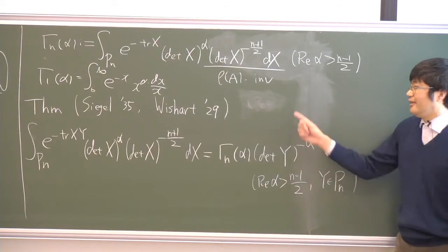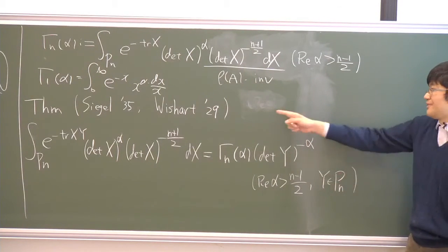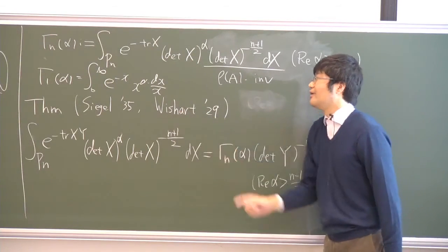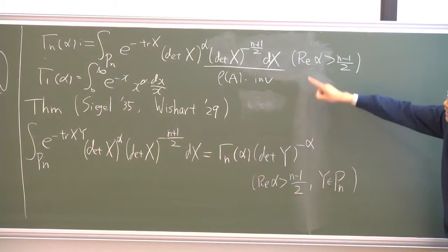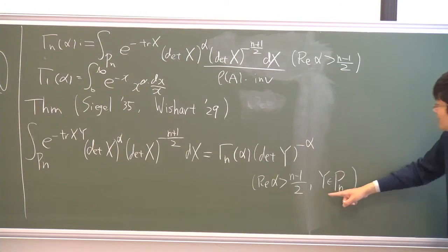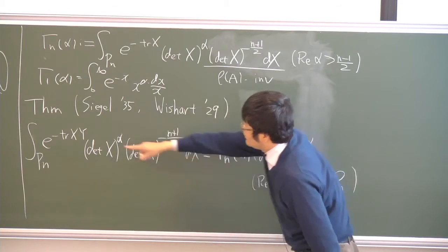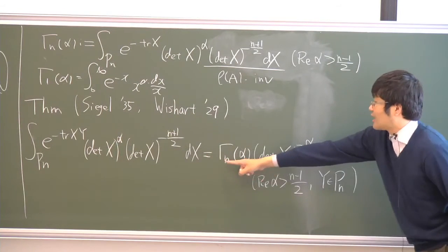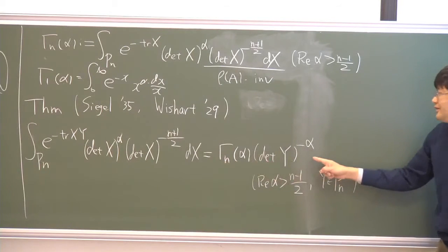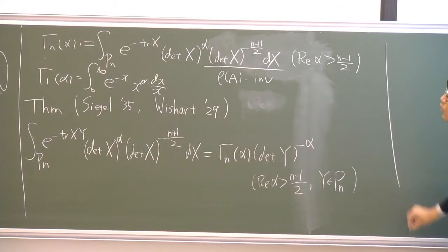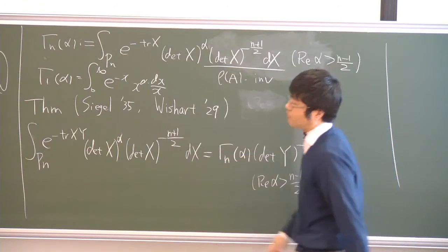this part is the integral invariant measure on the cone P_n. Then the Ziegler integral formula, named after Ziegler, but first found by Wishart in the following formula. The difference is the presence of the positive definite Y. So integral of this Y is here becomes gamma factor times determinant of negative power. So we can reduce this formula from the homogeneity.